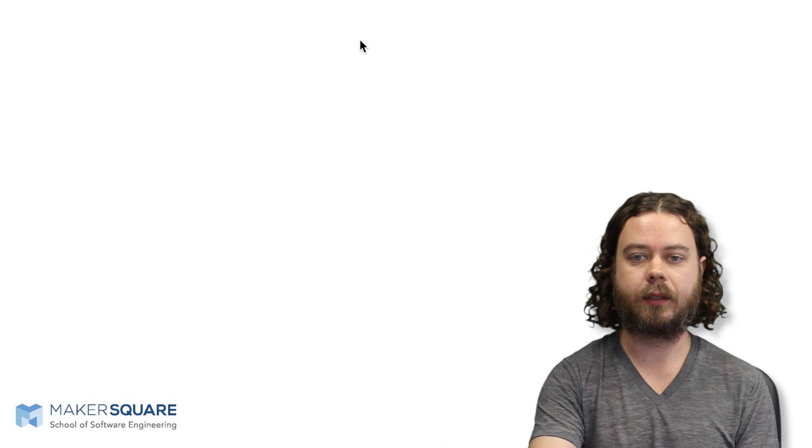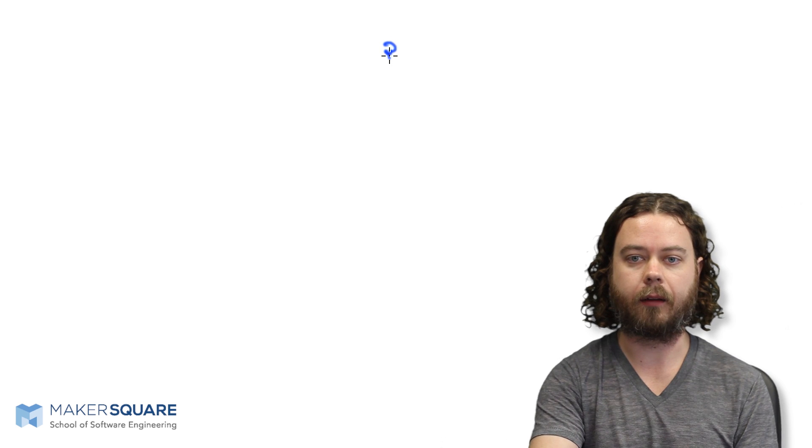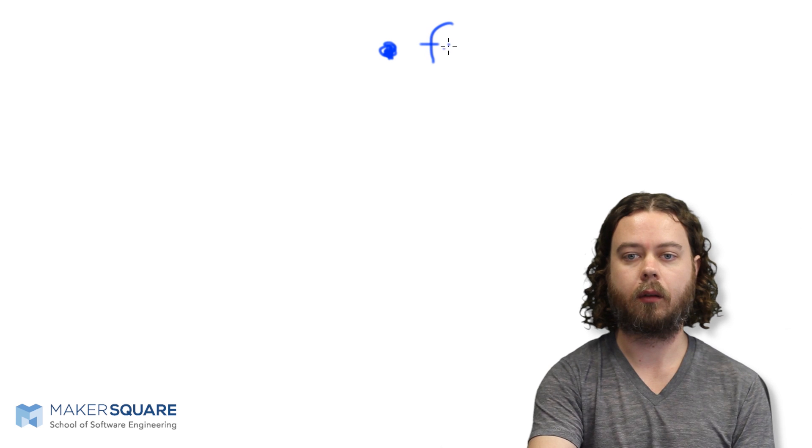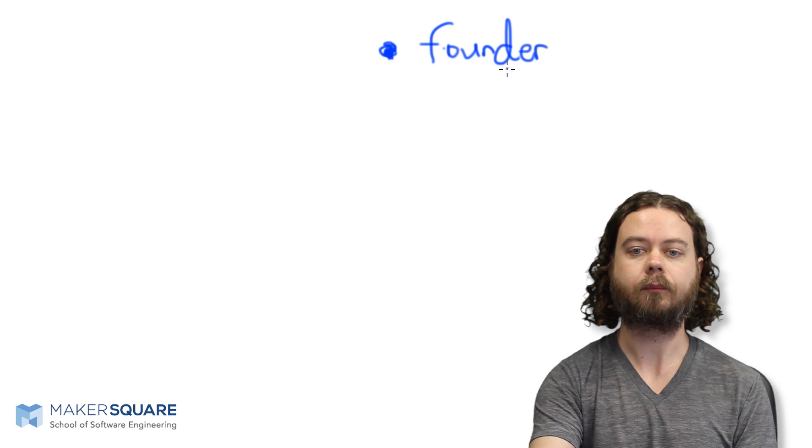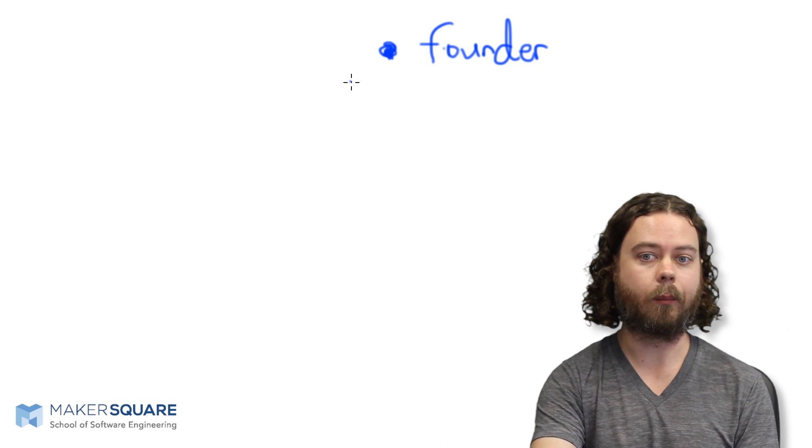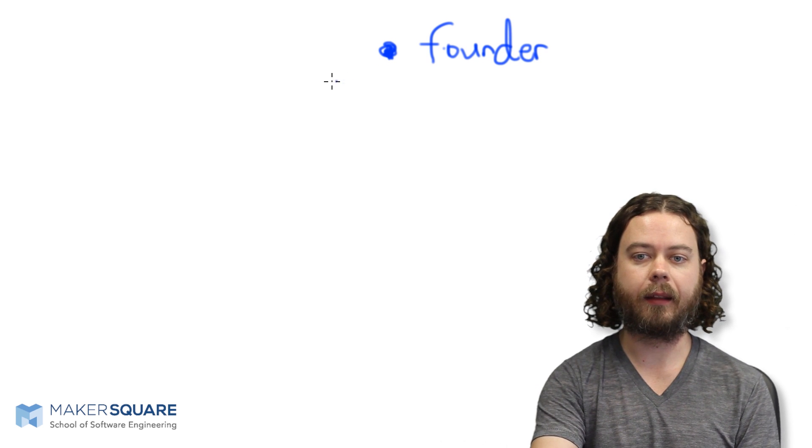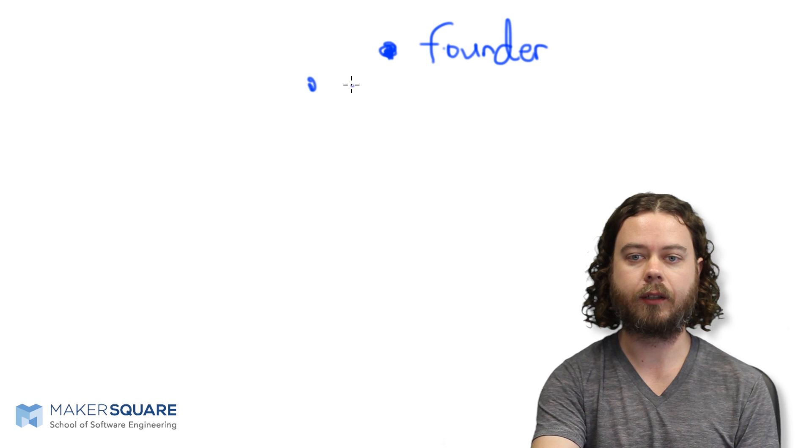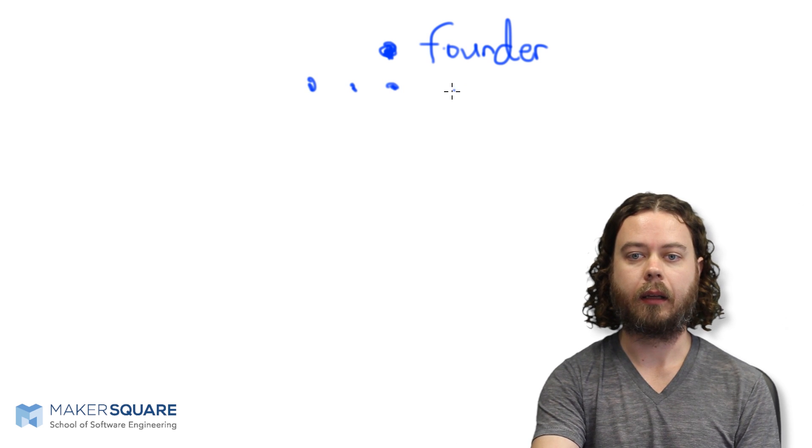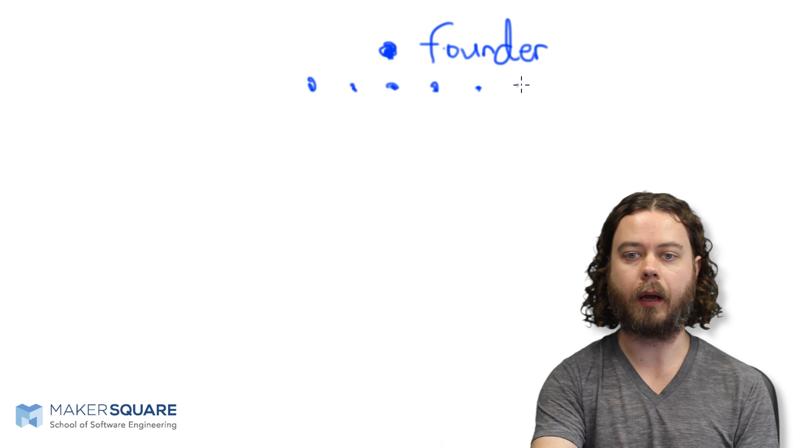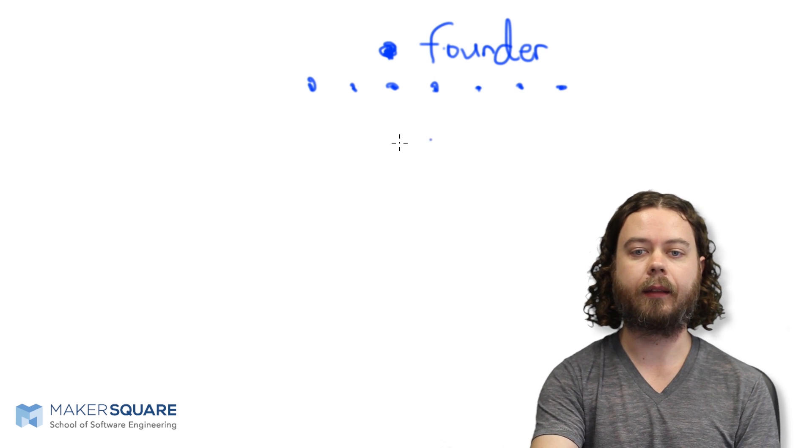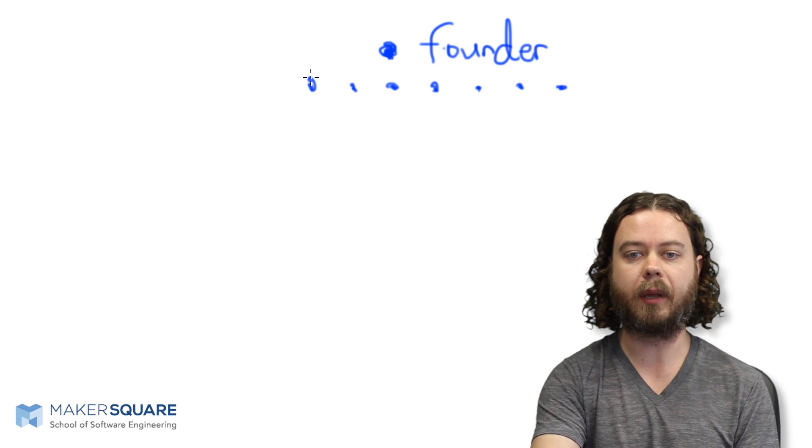I'm going to draw a common organizational structure. It usually starts with a single founder up here, this dot. So this is the founder, or maybe the CEO or something of the sort. And over time the company grows, it succeeds, and the founder starts hiring people, right? Each of these dots is a person. And the company grows more and more, and you hire more and more people. And then the company grows even more and more.